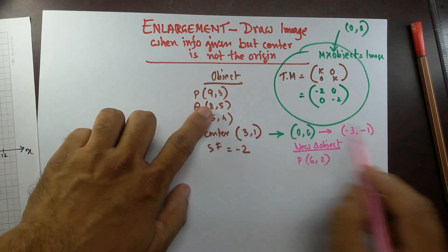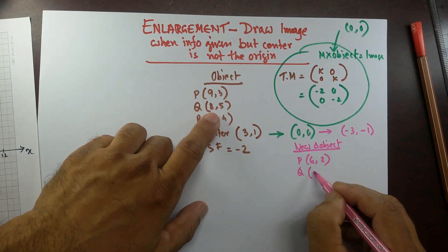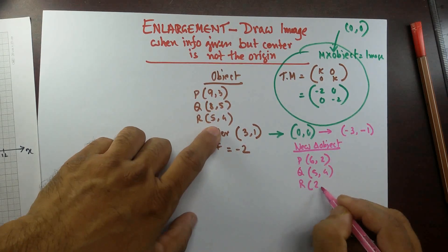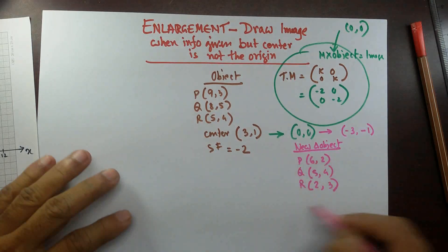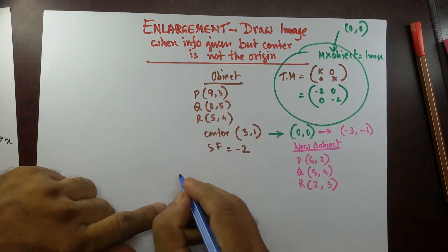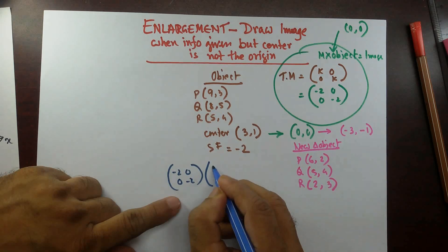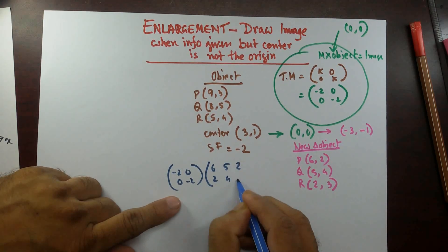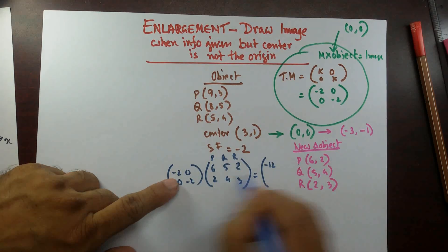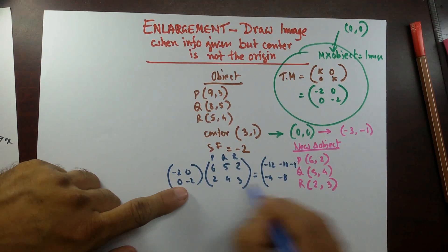After subtracting, the new object coordinates become: P(6,2) since 9−3=6 and 3−1=2; Q(5,4) since 8−3=5 and 5−1=4; and R(2,3) since 5−3=2 and 4−1=3. Now multiplying the transformation matrix [-2,0;0,-2] by this new object gives: P'(−12,−4), Q'(−10,−8), R'(−4,−6).